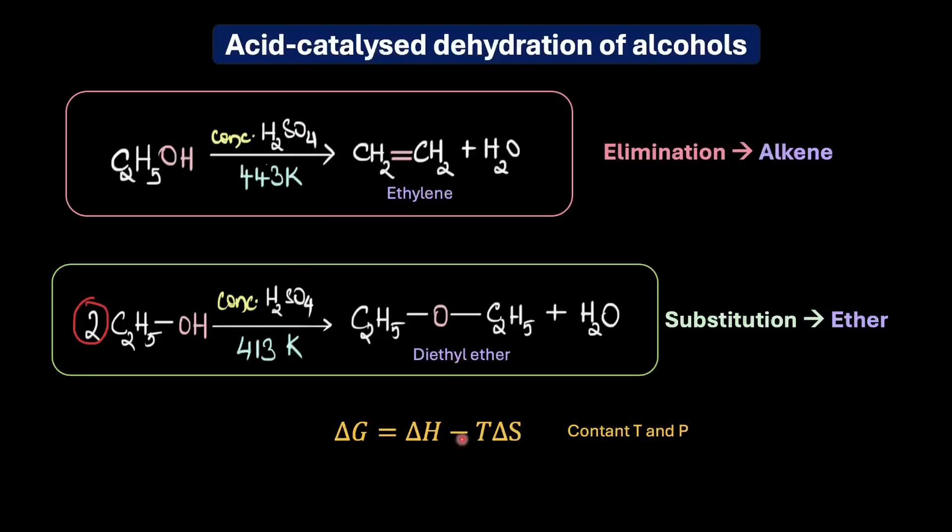So we know delta G is the Gibbs free energy change—this needs to be negative in order for the reaction to be spontaneous. Delta H is the enthalpy change, delta S is the entropy change, and this term minus T delta S is the entropy term's contribution to the free energy.